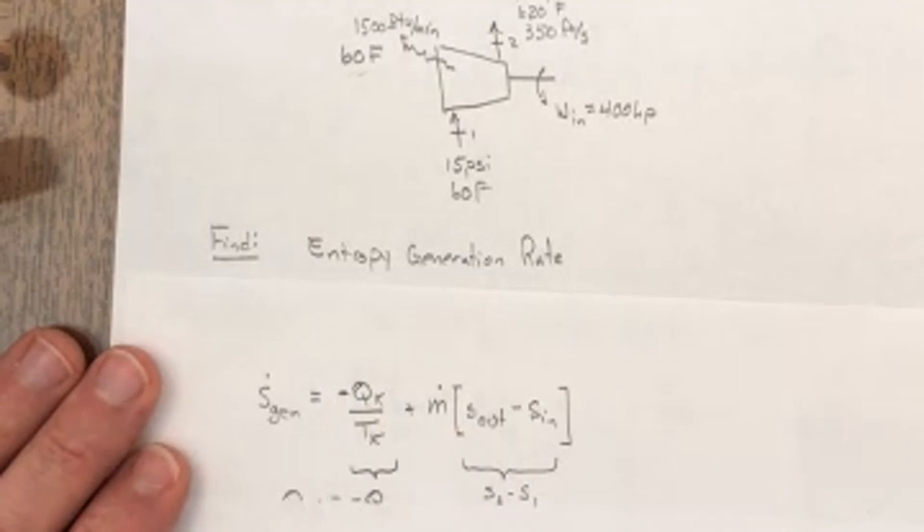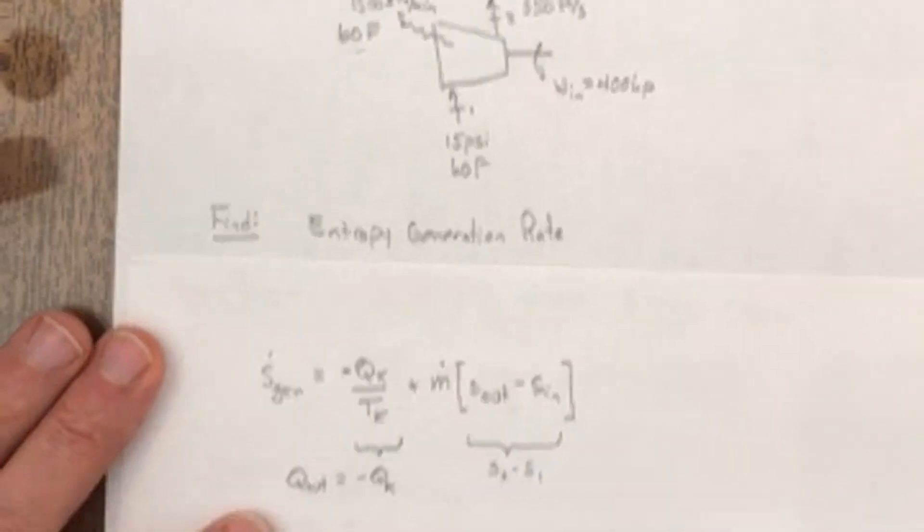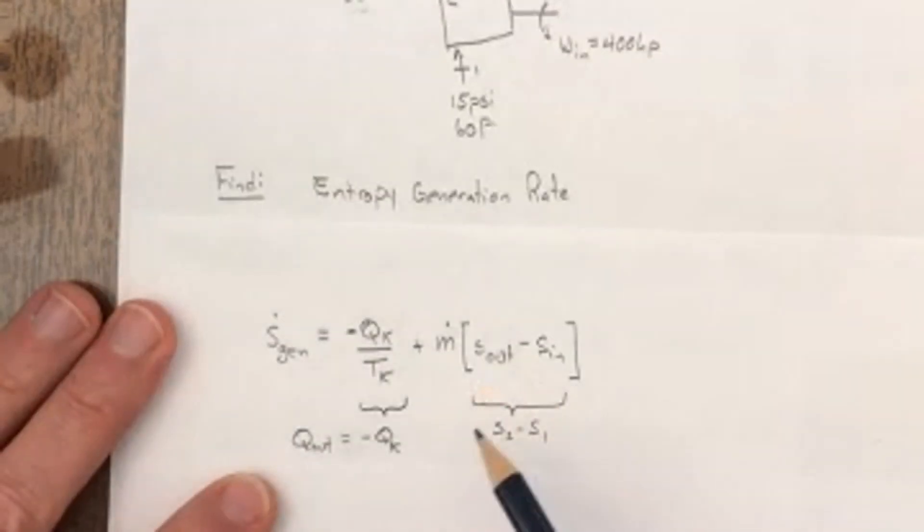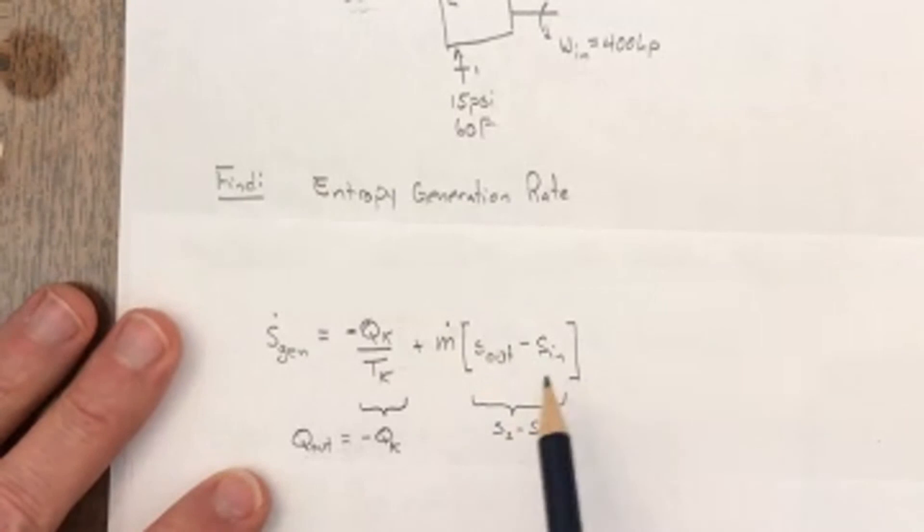The other thing to recognize, and this is just confusing nomenclature on a part of all thermo books, is this is this S out minus S in, but really it's like S2 minus S1. That's the way that we've written the equation.